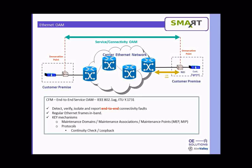The second version of Smart SFP is based on CFM — it is an end-to-end Service OAM based on IEEE 802.1AG and ITU Y.1731. As shown here, there are two customer premises at the ends of the service. With end-to-end Service OAM, you can detect, verify, isolate, and report connectivity faults. This is implemented in regular Ethernet frames in-band. The protocols implemented in our SFPs are continuity check and loopback.